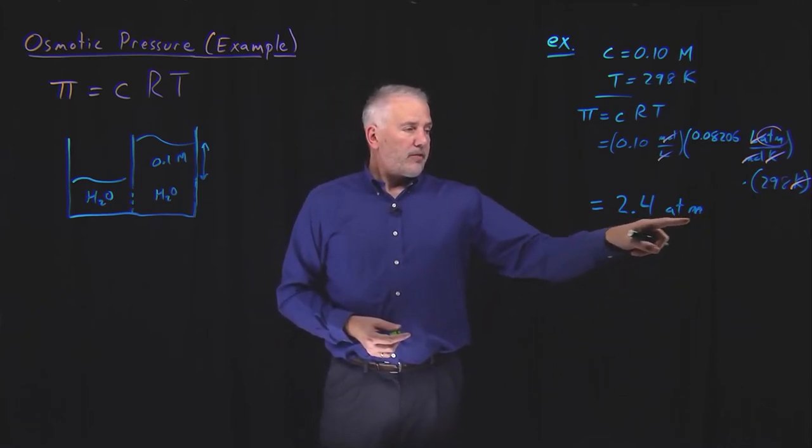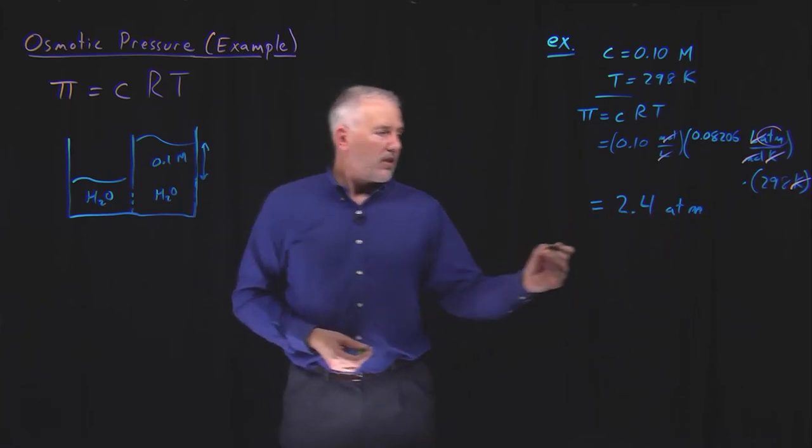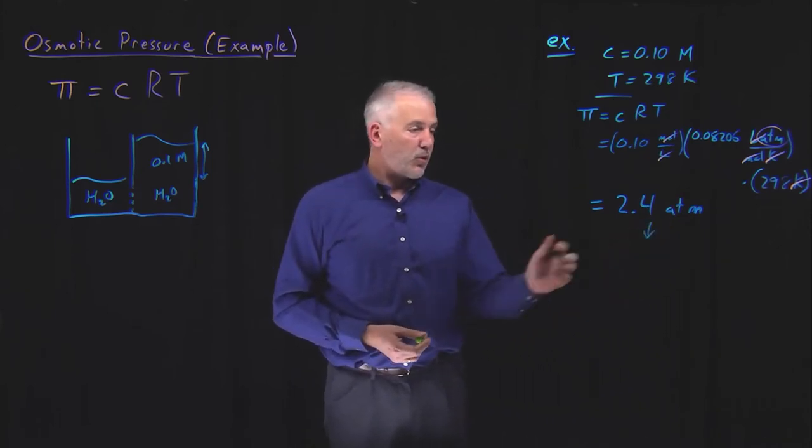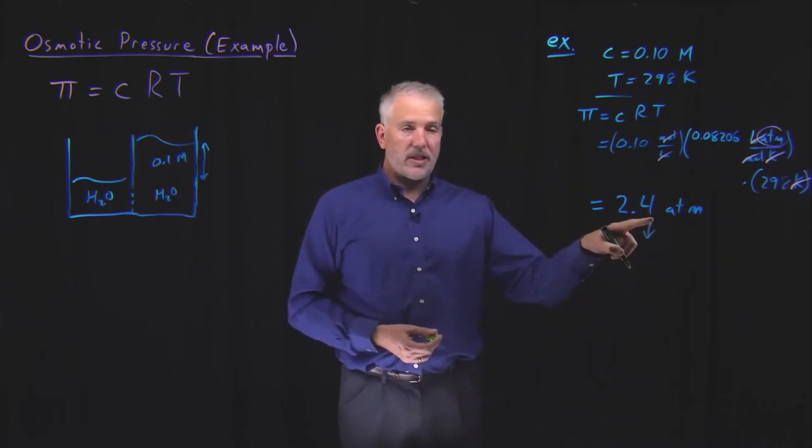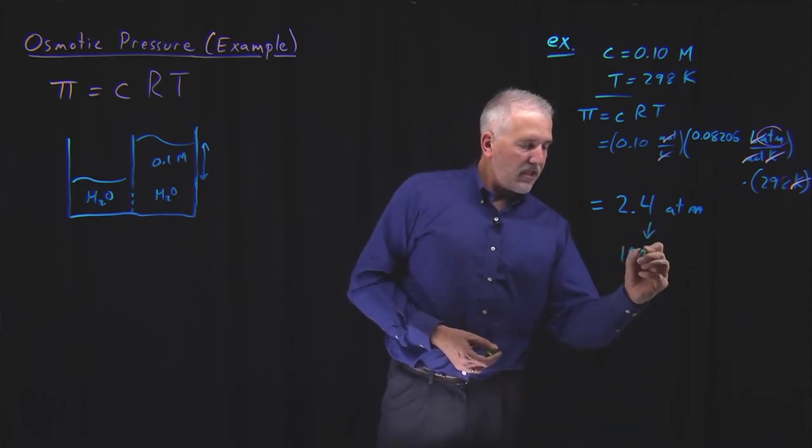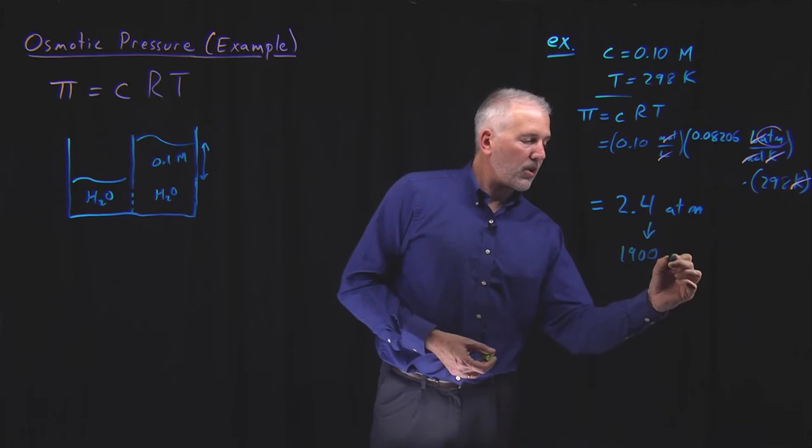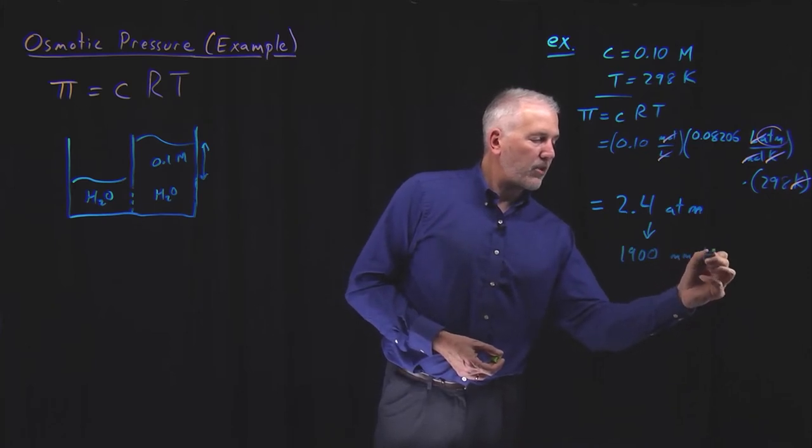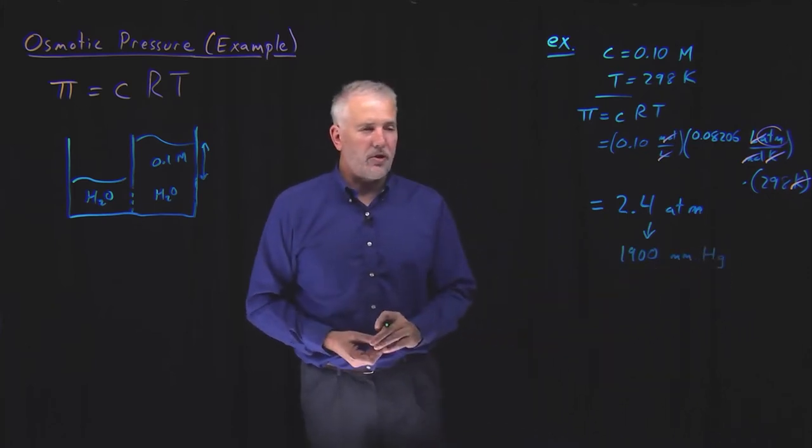We can think of 2.4 atmospheres, if I convert that to units of Torr, if I multiply by 760 to get units of Torr, that value, I can think of it as 1900 Torr, or the more old-fashioned name for the Torr unit is a millimeter of mercury.